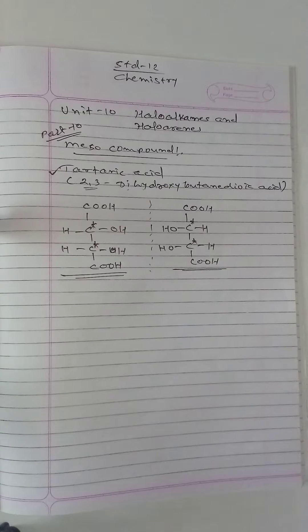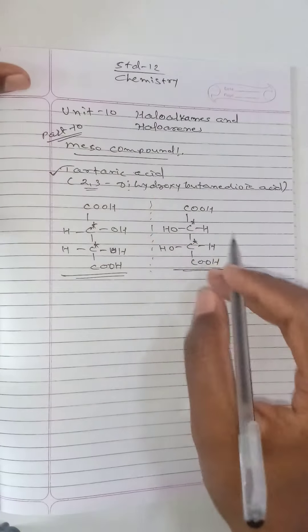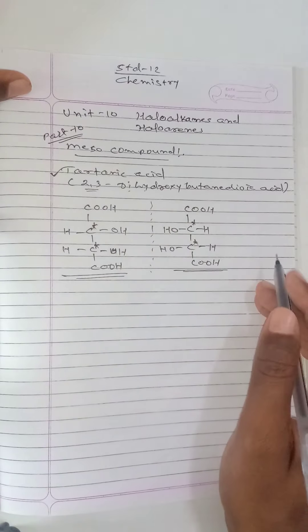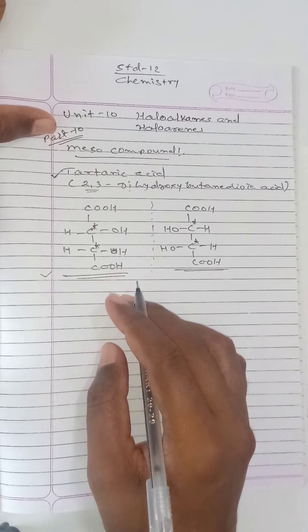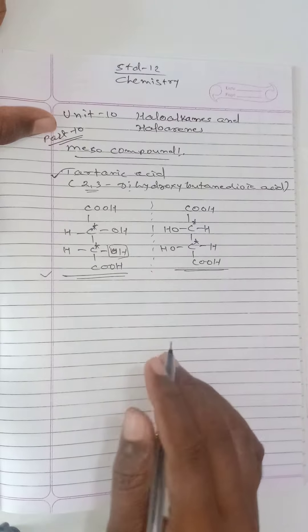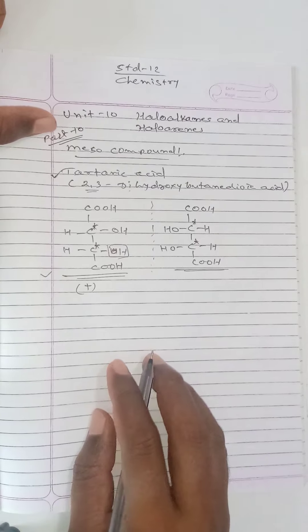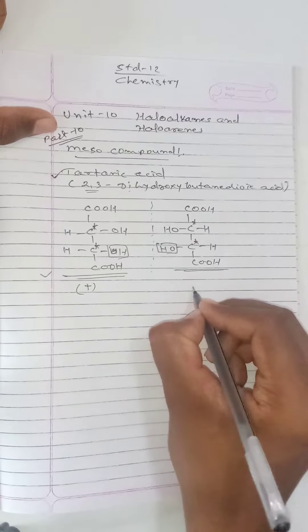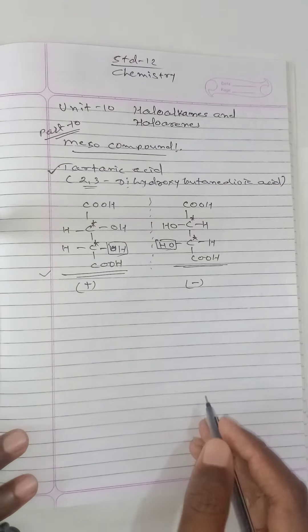Hello friends, Standard 12 Chemistry Unit 10, Haloalkanes and Haloarenes Part 10. Last time we discussed about enantiomers, racemic mixture, and meso compound. The example we discussed was for tartaric acid — its IUPAC nomenclature is 2,3-dihydroxybutanedioic acid. To identify whether it is dextro or levo, only check the last hydroxyl group: if it's on the right side it is dextrorotatory, if on the left side it is levorotatory.